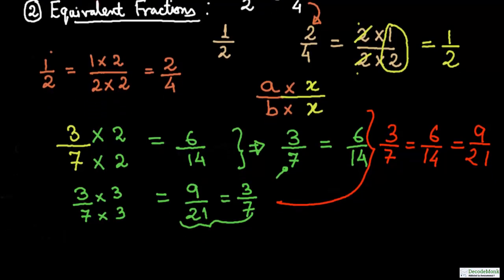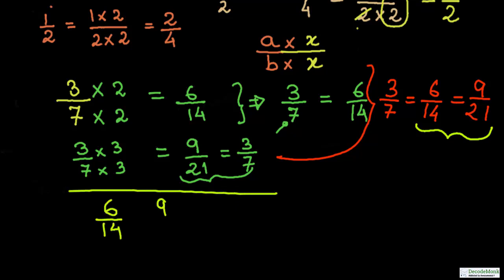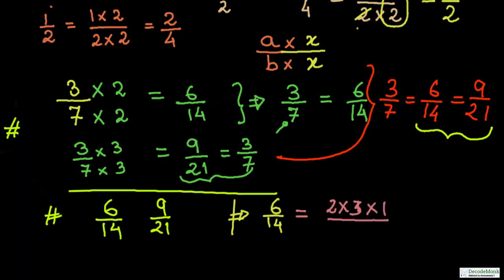Now consider comparing two fractions: 6 upon 14 and 9 upon 21. Suppose you do not know these two are equal — you need to find which is greater, or conclude they are equal. For the first fraction, 6 upon 14, we need to factorize or break the numerator and denominator into the lowest possible factors. So 6 can be written as 2 into 3, and 14 can be written as 2 into 7.